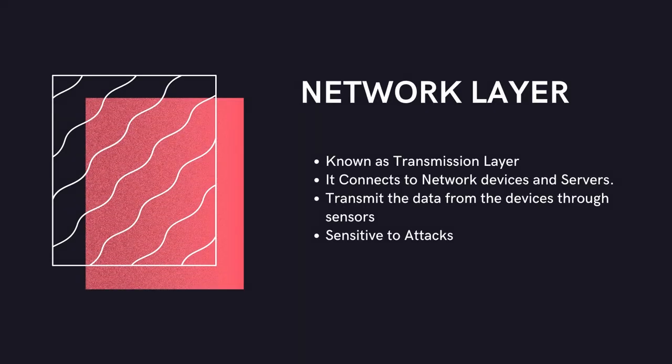The network layer binds the device to the server. After the perception layer receives the data, the network layer sends the data to the application layer. It transfers the data through sensors in the device and is usually the most vulnerable layer, since it is sensitive to attacks.